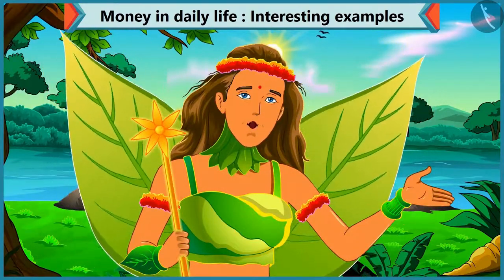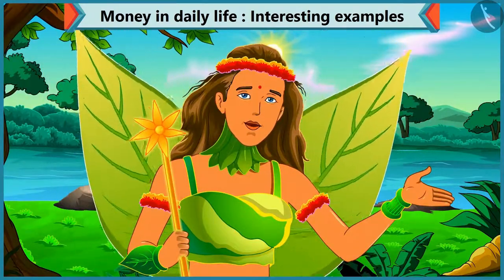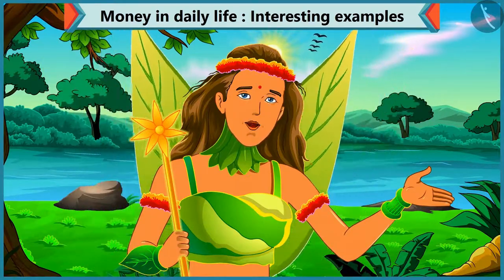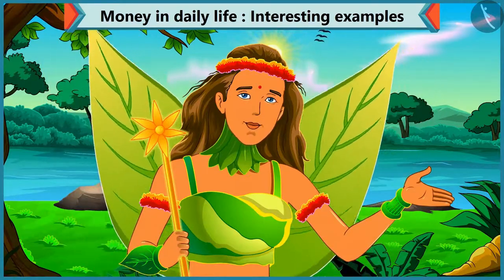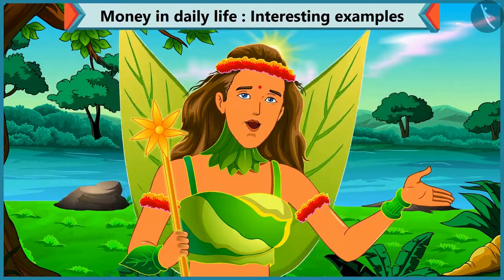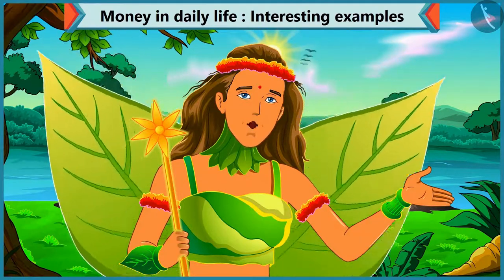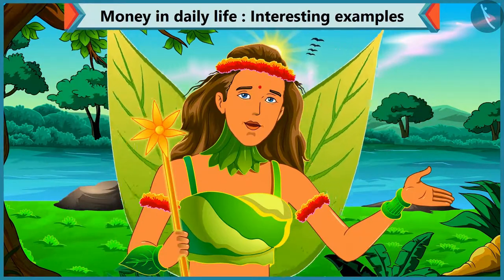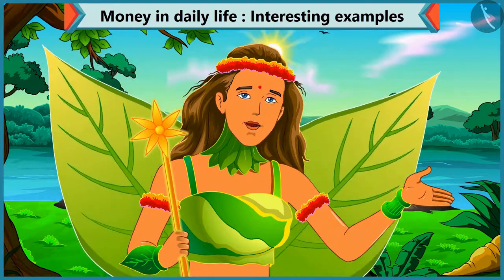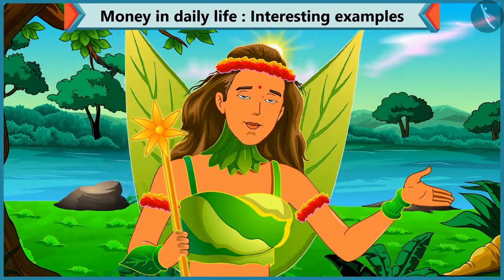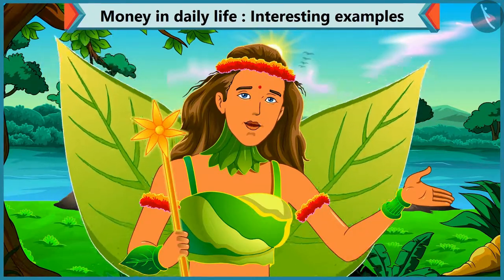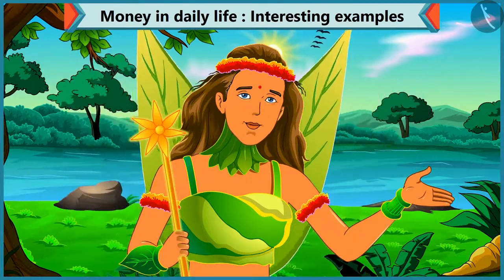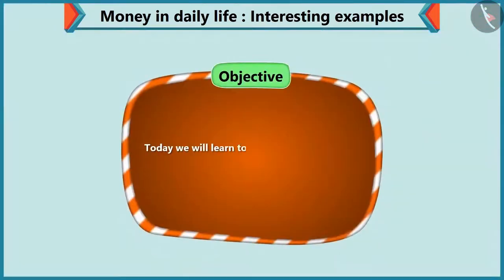Today, Choo Choo has to buy a pen for himself. He asks for a 10 rupee loan from Chichi. Chichi gives Choo Choo different kinds of coins that will sum up as 10 rupees. So kids, today we will learn to make an amount by adding different coins in this video.